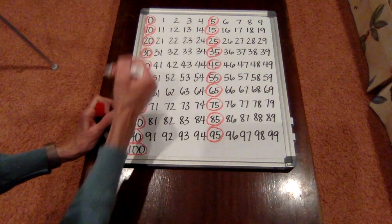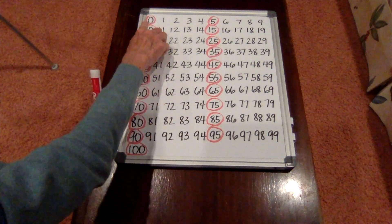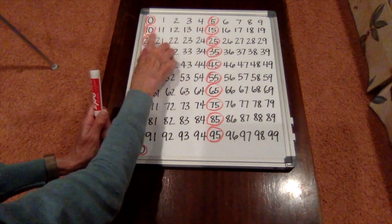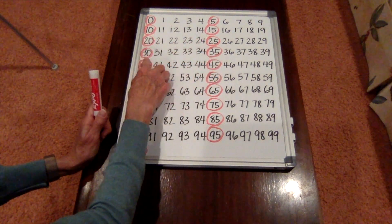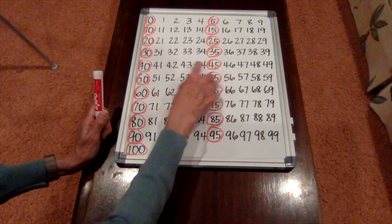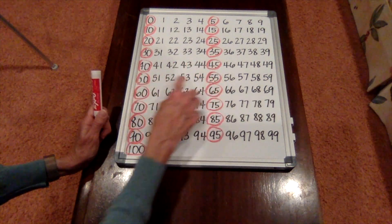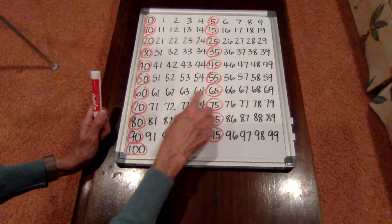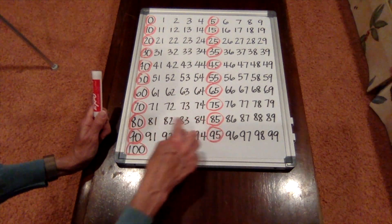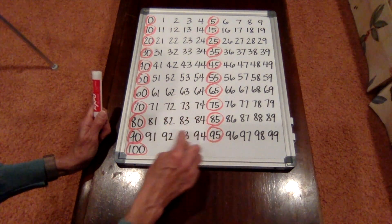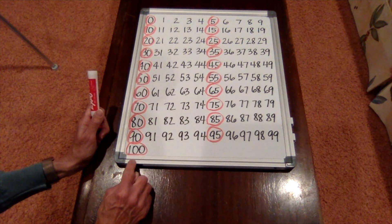Zero, five, ten, fifteen, twenty, twenty-five, thirty, thirty-five, forty, forty-five, fifty, fifty-five, sixty, sixty-five, seventy, seventy-five, eighty, eighty-five, ninety, ninety-five, one hundred!